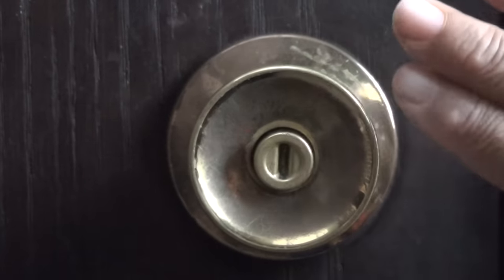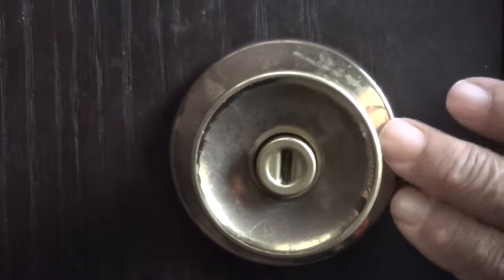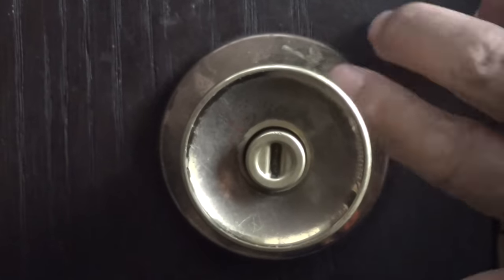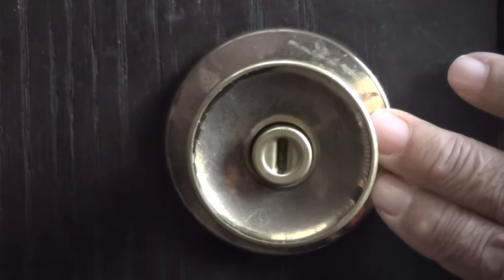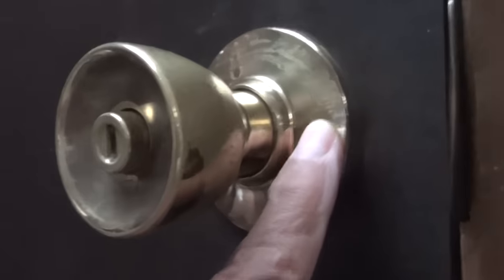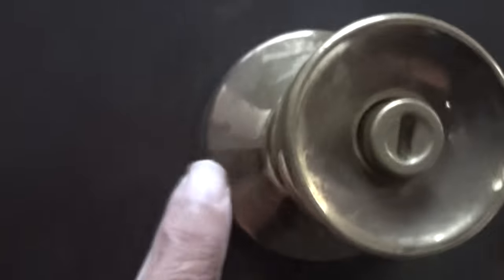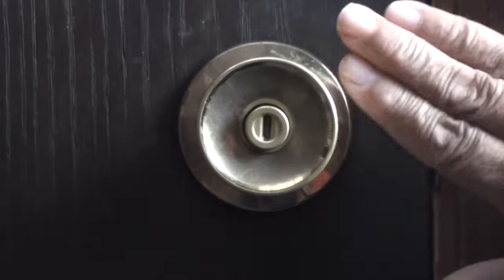What you're looking at is an original doorknob and lock set to the house. It's very old, about 50 years old. I want to show you how to remove a doorknob that has no visible screws on the faceplate. So let's get to it.